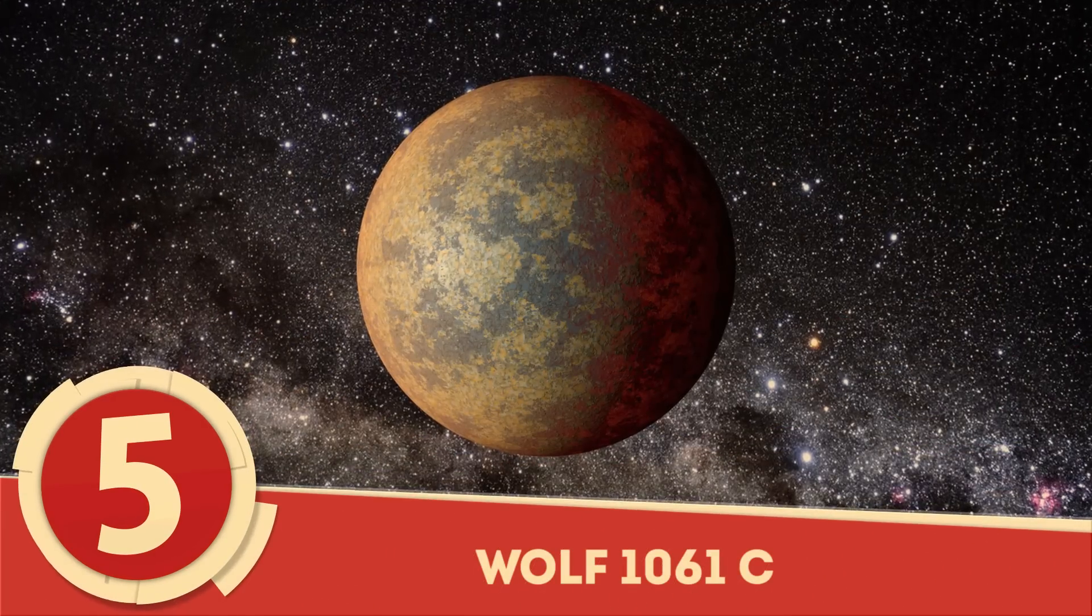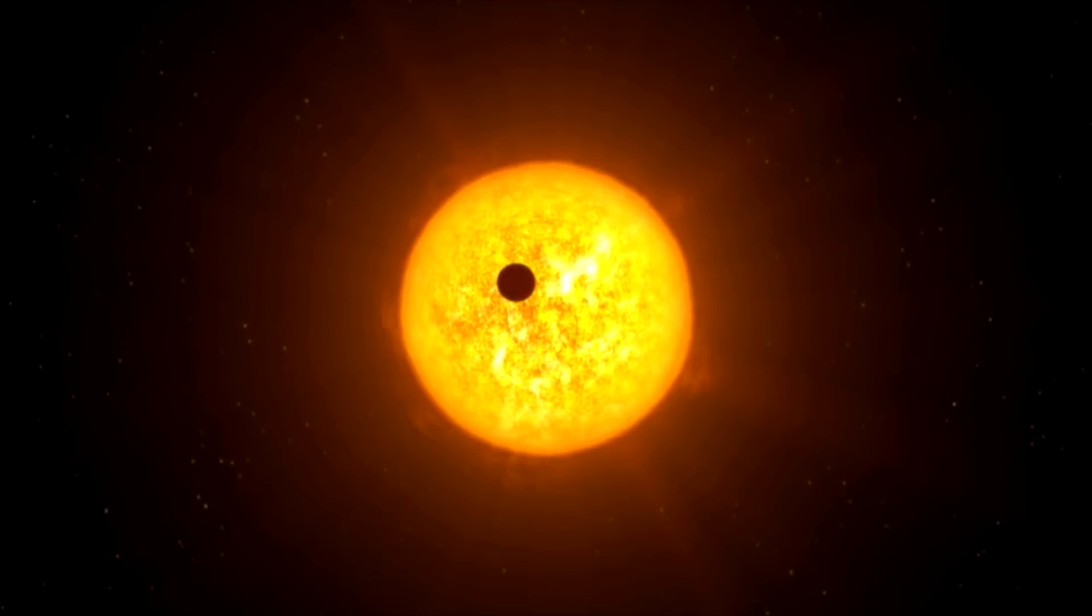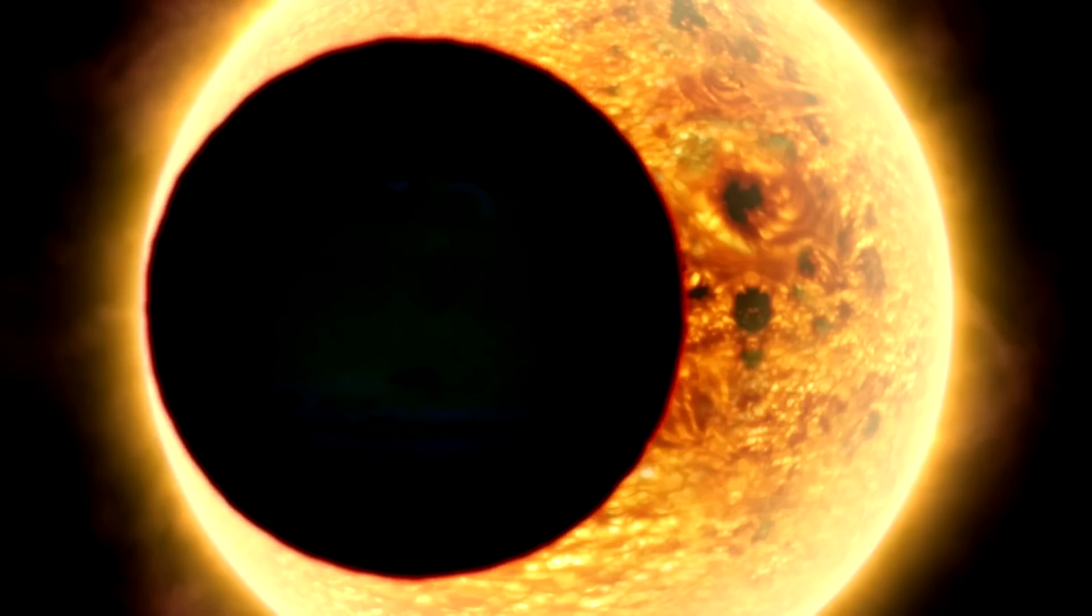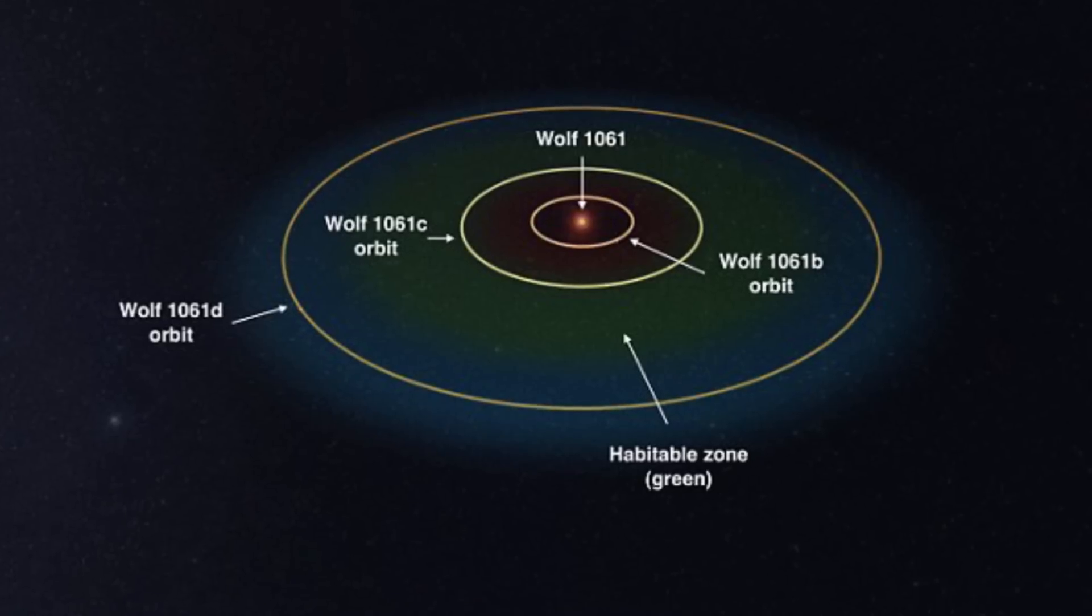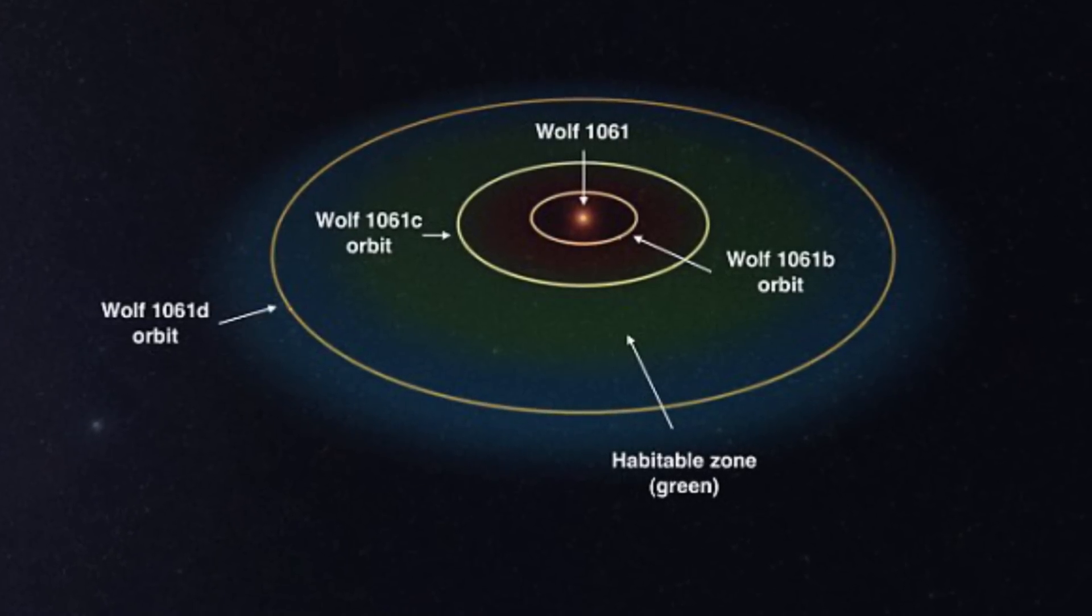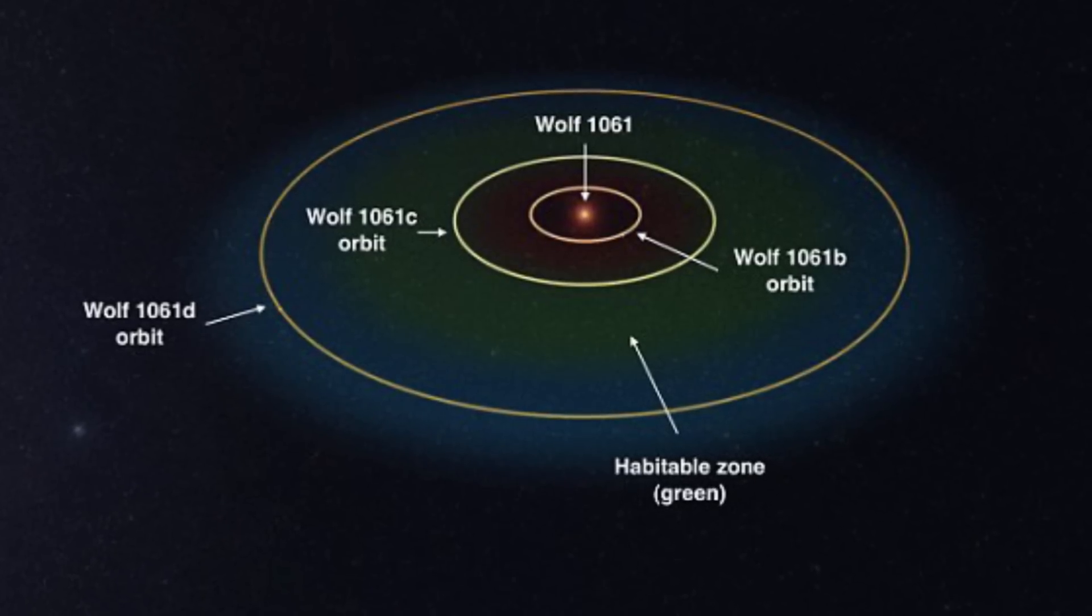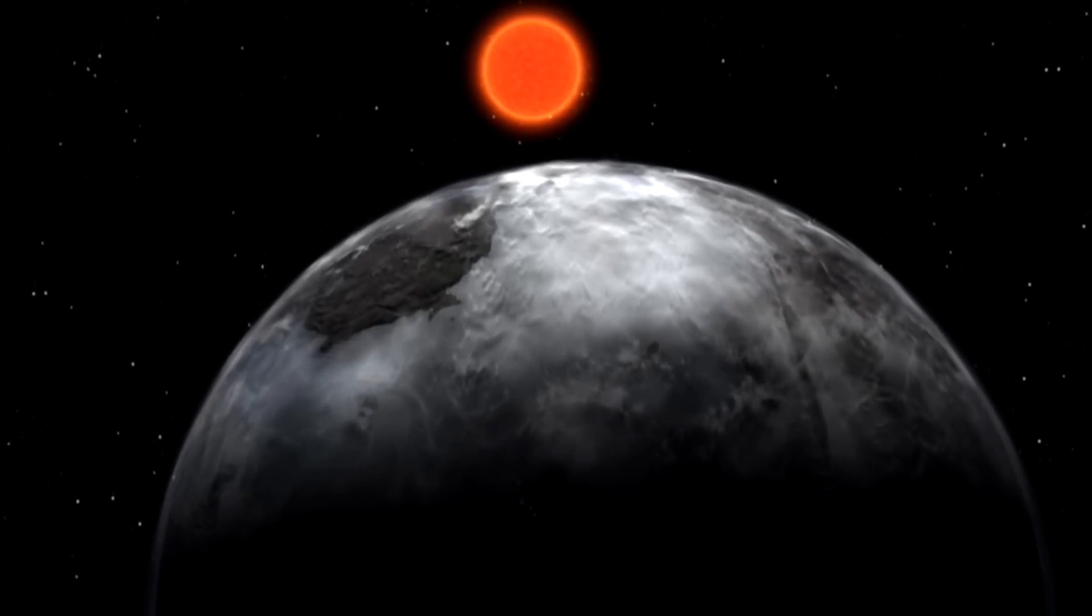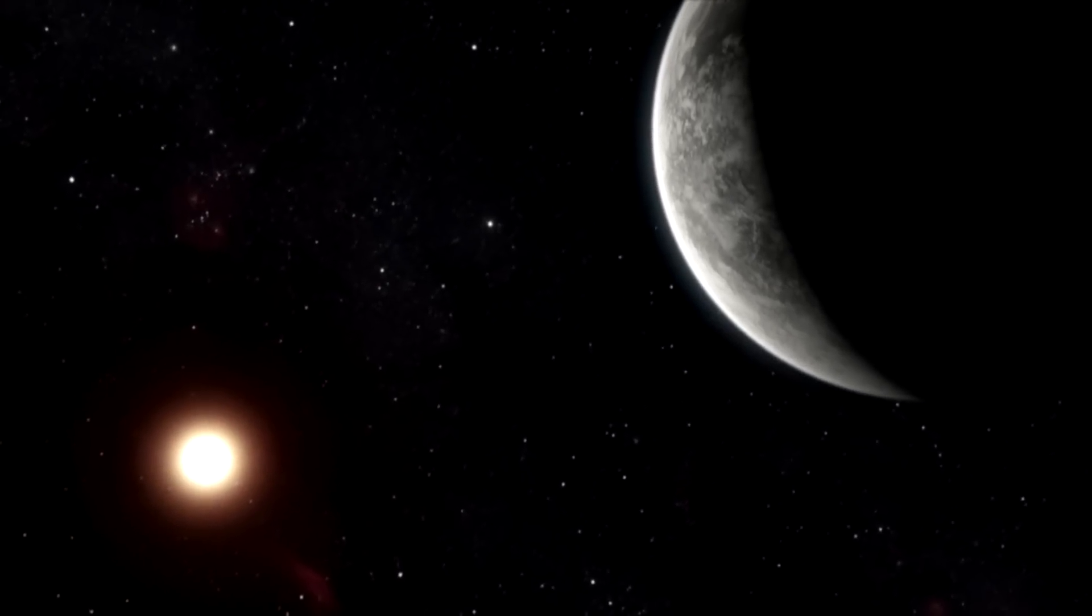Number 5: Wolf 1061c. At an ESI of 0.76, Wolf 1061c is a potentially rocky super-Earth exoplanet discovered in December of 2015, some 14 light-years away from Earth. Orbiting Wolf 1061 at 0.084 AU, the exoplanet is closer to the inner edge of the habitable zone and is believed to be tidally locked. With one side permanently fixated on its star, the possibility of an extreme difference in temperatures on either side of the planet is incredibly likely.